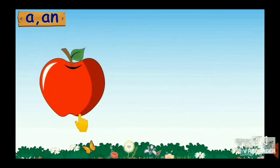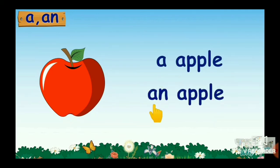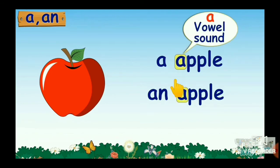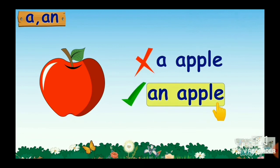Let's learn usage of A and AN with several examples. What is this? This is a single apple. So, we have to use A or AN before it. But, apple starts with sound of A. So, it is a vowel sound. So, we will choose an apple from these. So, it is an apple.